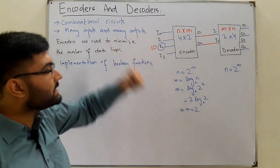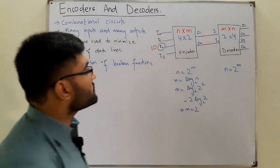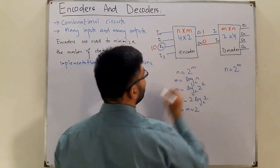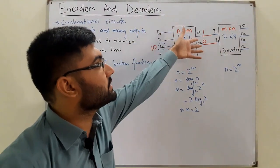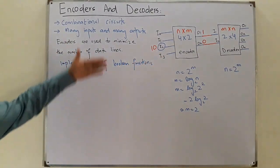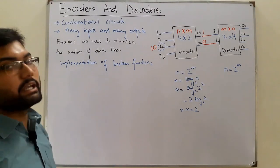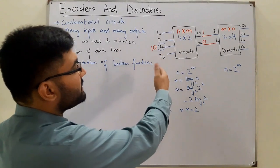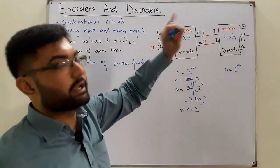Since i2 is active, the encoder sets o1 to 1 and o2 to 0. This encodes i2's identity onto the two output lines. i0, i1, and i3 are ignored since they were low — we only had data at i2, so only that gets passed along.